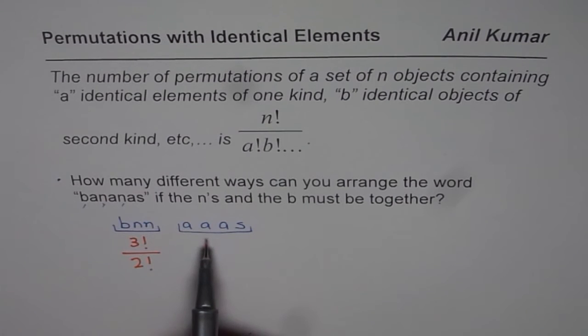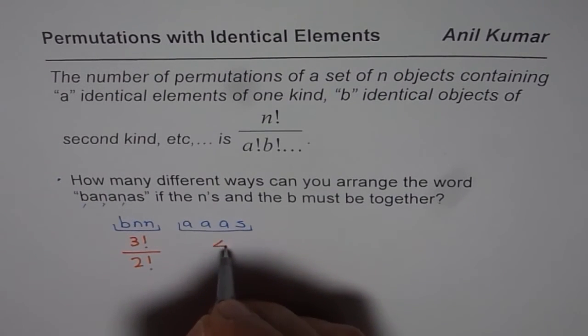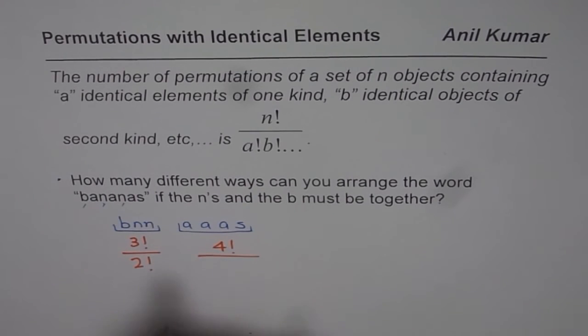Now, let's look into the other part: a, a, a, and s. In this case, we have four objects. So we have 4 factorial in the numerator divided by identical objects - a is one, two, three. So 4 factorial divided by 3. That is what it is.